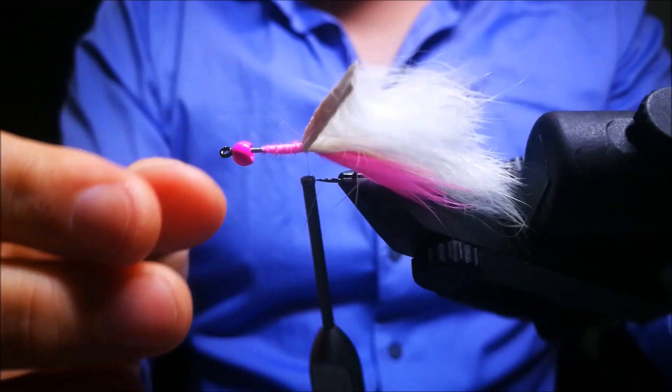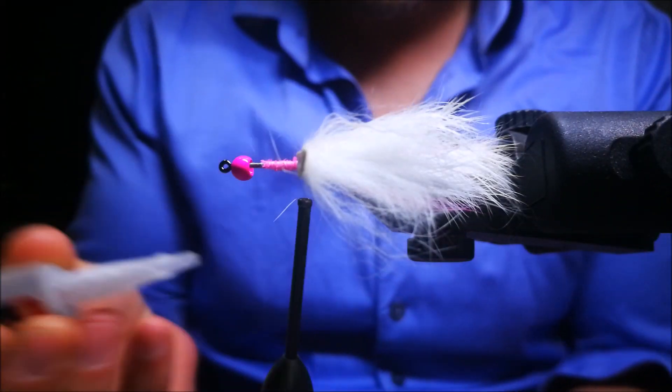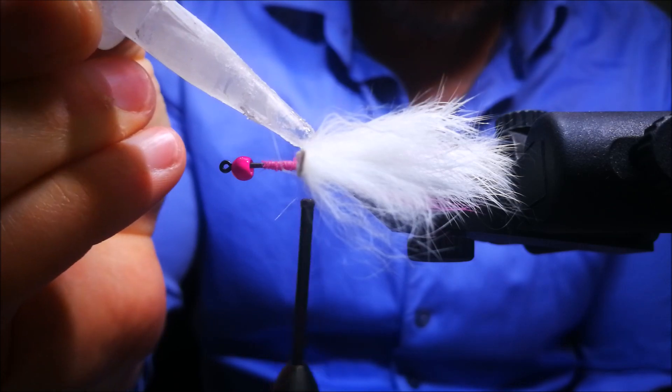Make sure you tie it down slowly. Now we're going to secure these thread wraps with some superglue.